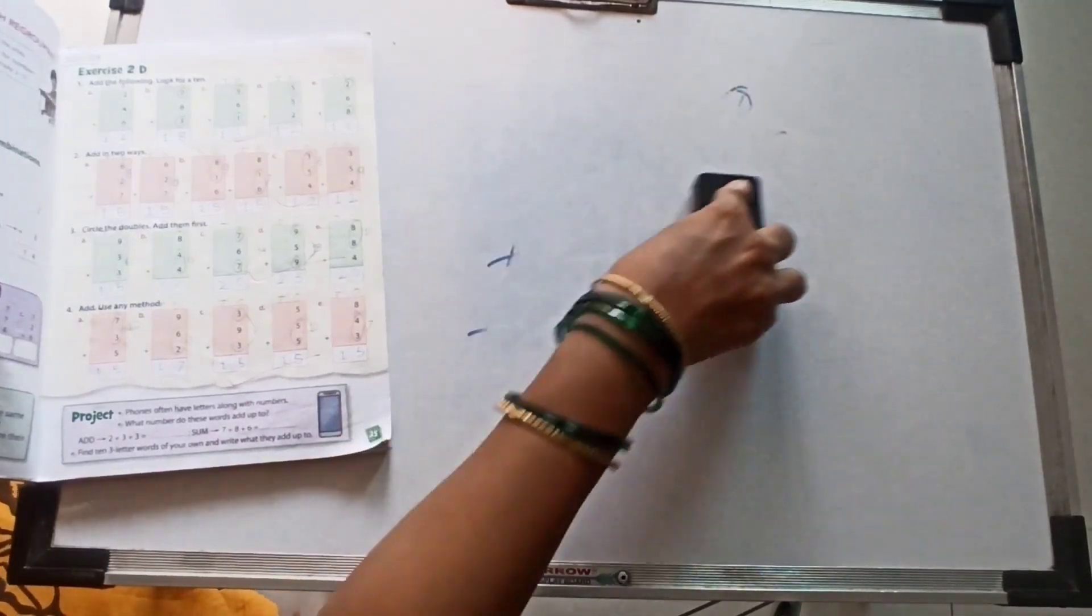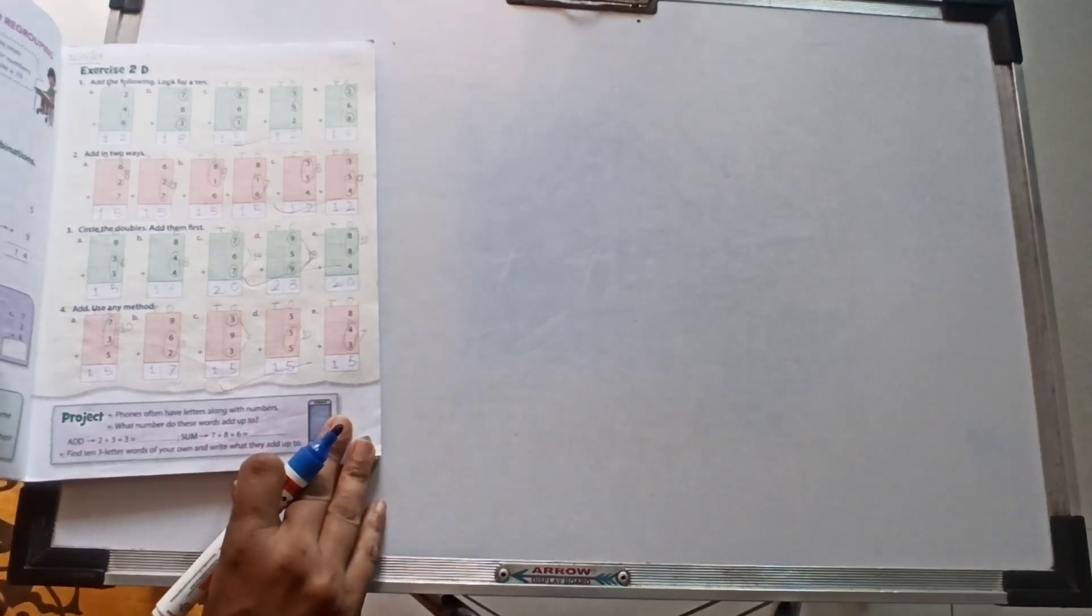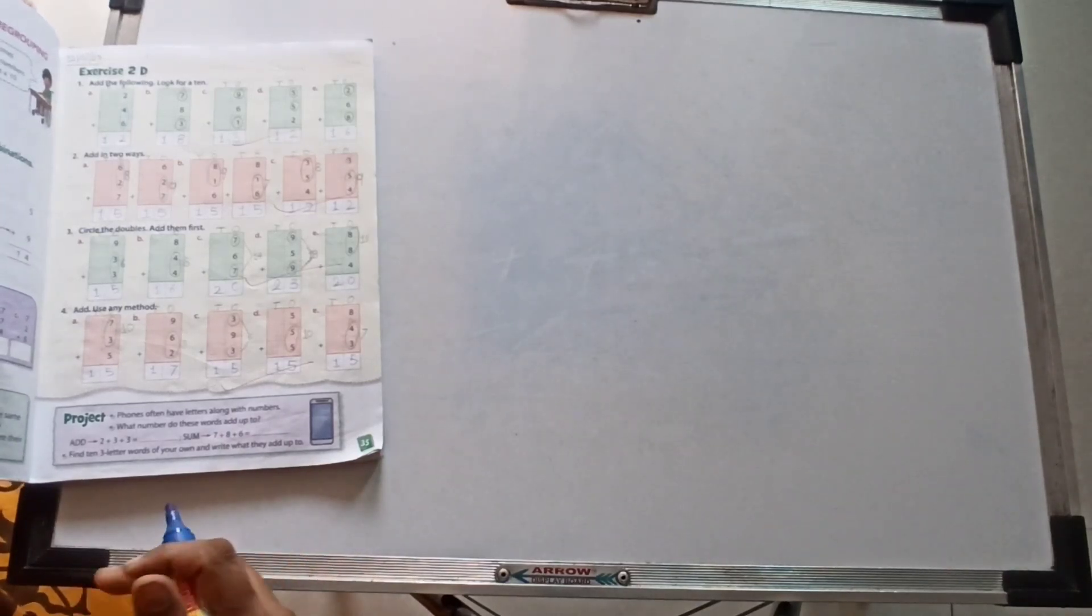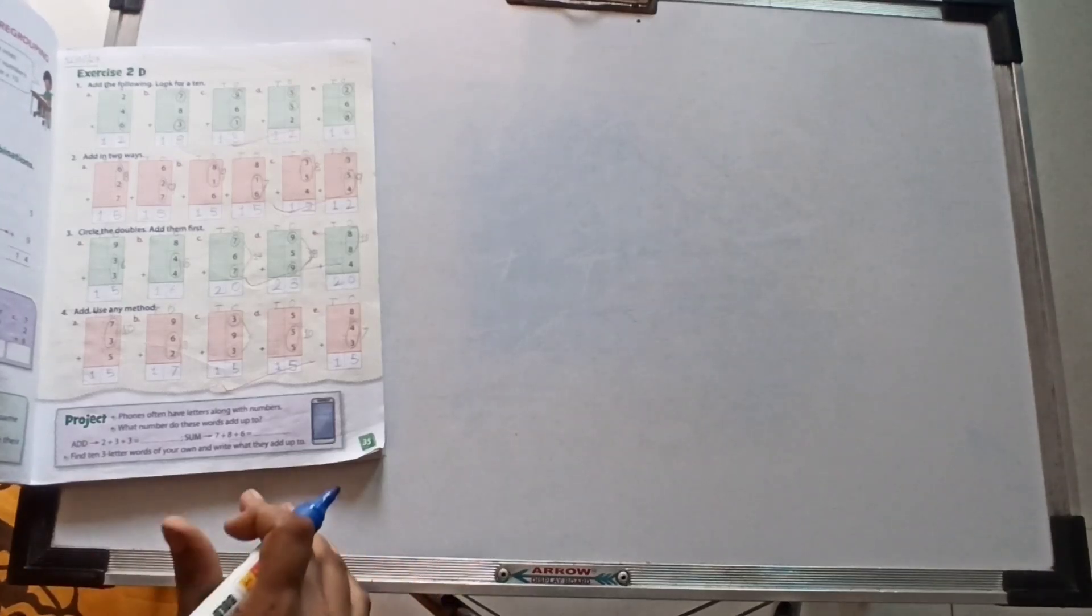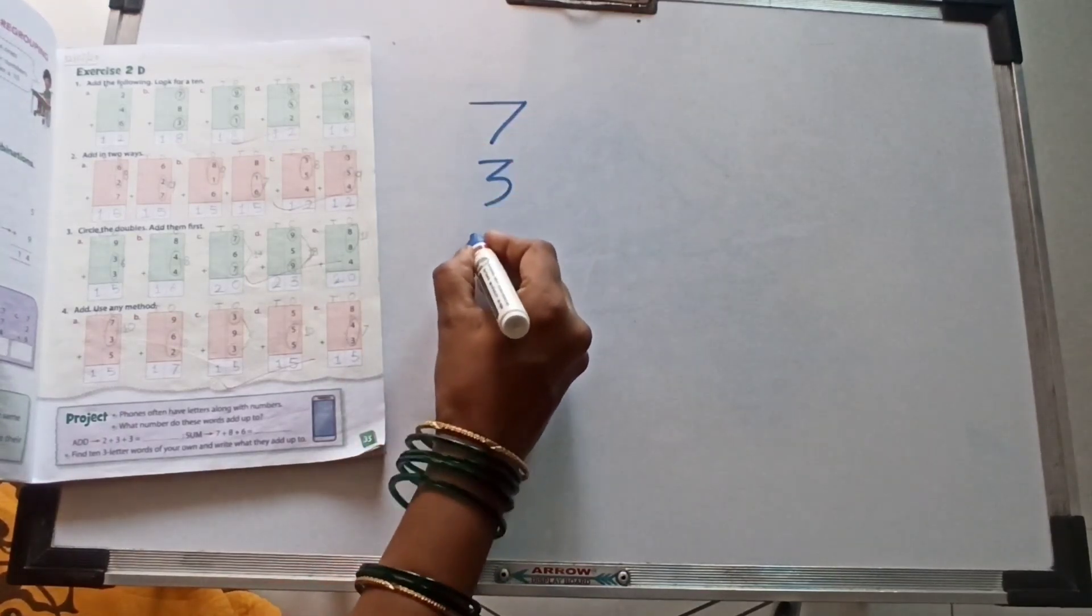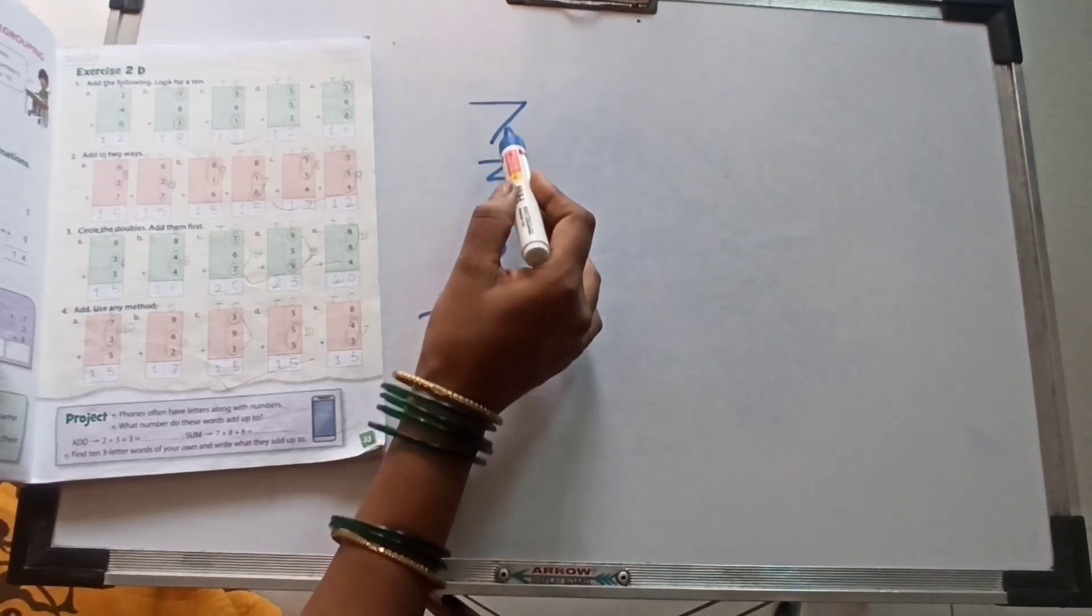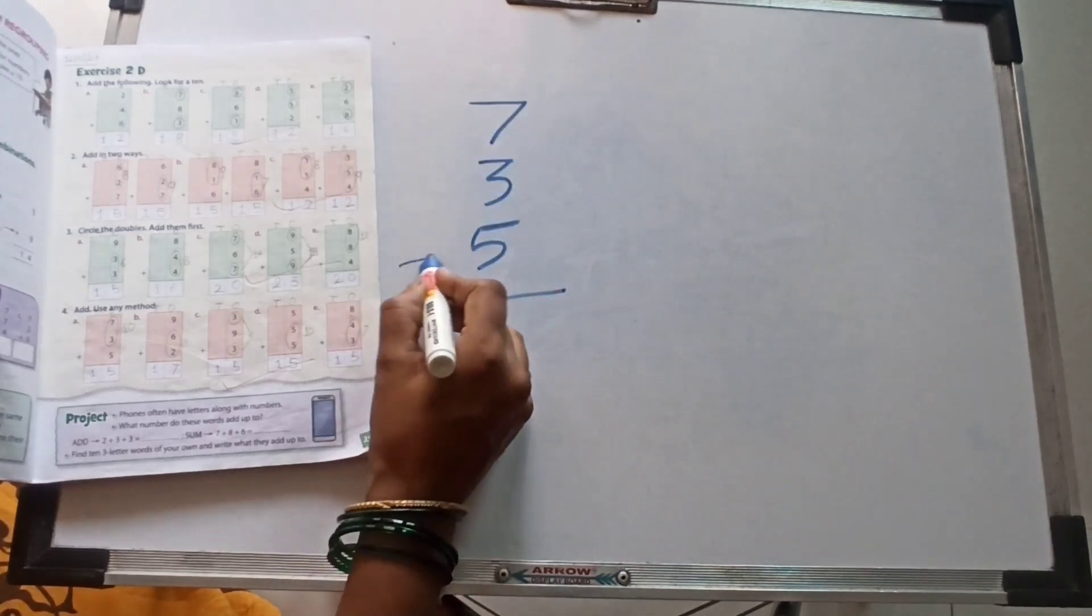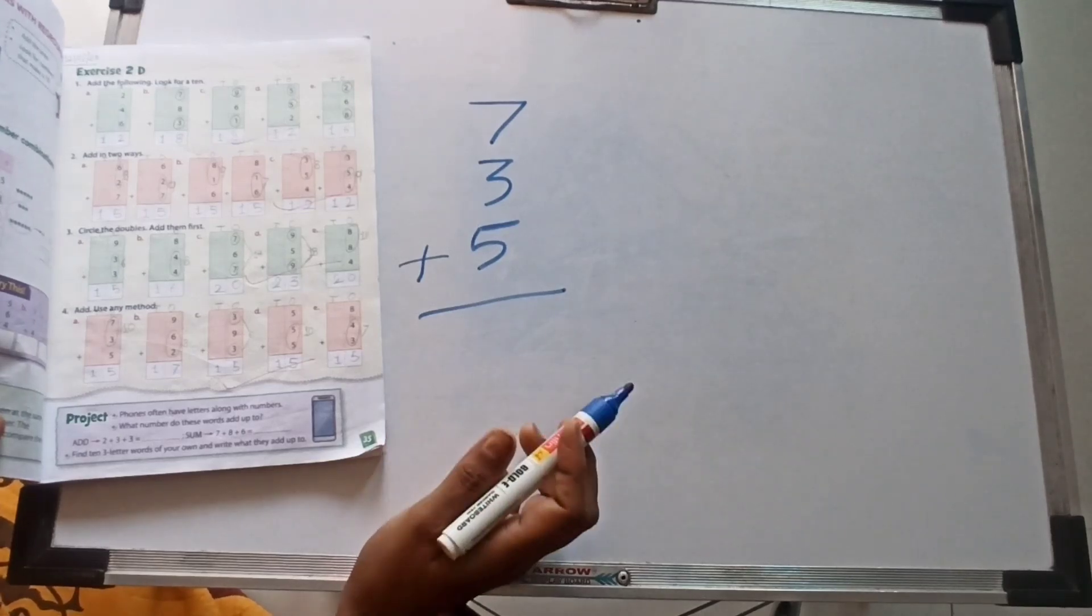I hope I love you enjoy this one lecture. Next, fourth one, our question from exercise 2nd D. Add, use any method. In this question, our textbook saying you can use here any method. Circle the doubles or you can use any method here. Then first one, 7 plus 3 plus 5. You can first add first two numbers, 7 plus 3, then add 5, or you can add 5 plus 3, 8, 8 plus 7. Anyway, you can find out, write down your addition, your sum. You can solve.